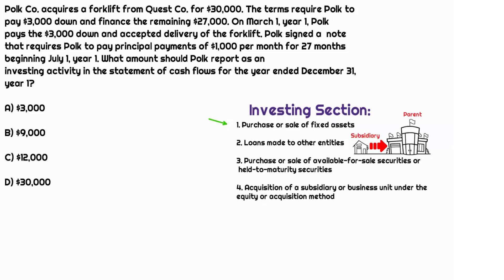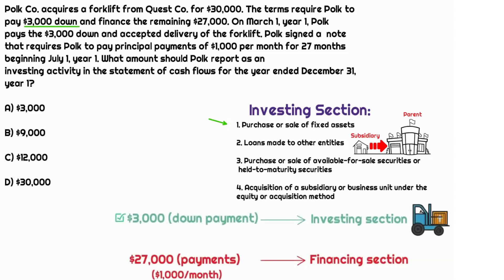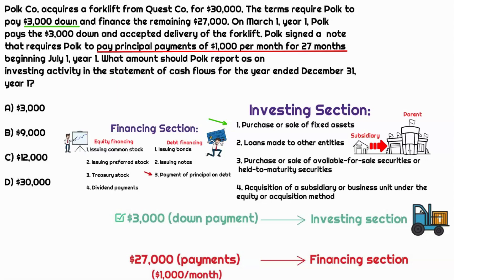The acquisition price of this forklift is going to cost $30,000. However, when you think about the statement of cash flows, the question you need to ask yourself is: how much cash is going out the door today? While $30,000 is the eventual amount that will get paid, $3,000 is the amount going out the door today. The remaining $27,000 is deferred as a future payment — $1,000 per month over the next 27 months — classified as debt financing in the financing section. The $3,000 down payment is the cash going out the door today for this investment, presented in the investing section. Therefore, the correct answer is $3,000.